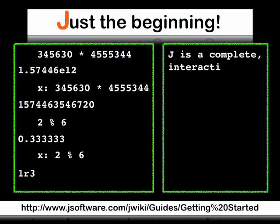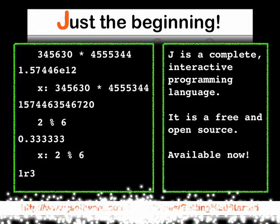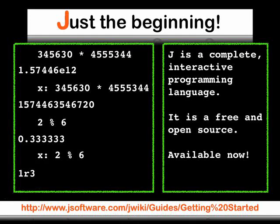J is a complete interactive programming language. It's free and open source, and it's available now.